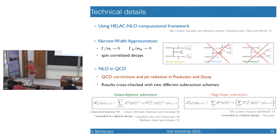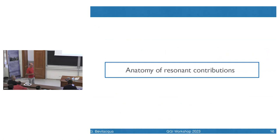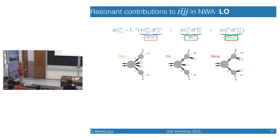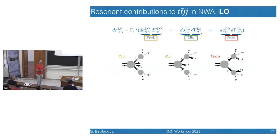Now we go to the phenomenological results. It is important to understand the anatomy of the resonant contributions to the narrow width approximation cross-section. Starting from leading order, the picture is simplified and intuitive. At LO, you can have the two extra jets produced at the production level with trivial top decays — we label this the production contribution. Similarly, jet radiation can be generated at the level of top decays — we label this the decay contribution. Then there are intermediate configurations with radiation both at production and decay matrix elements — we label these as mix.